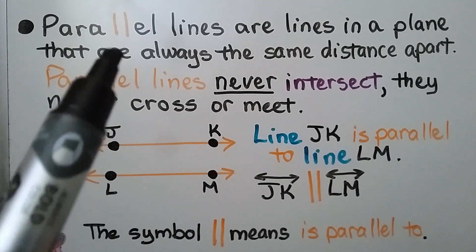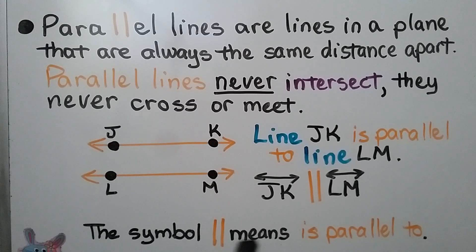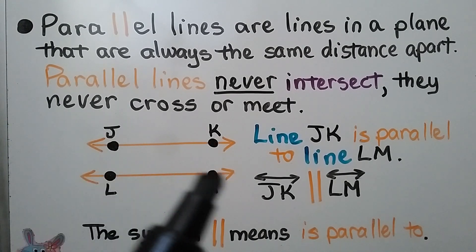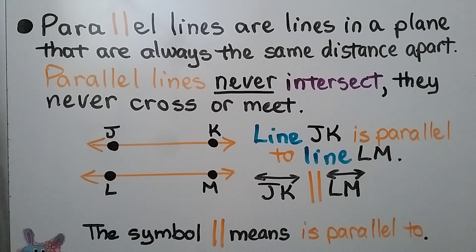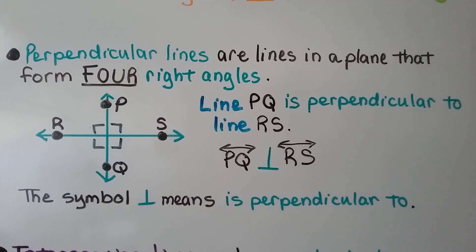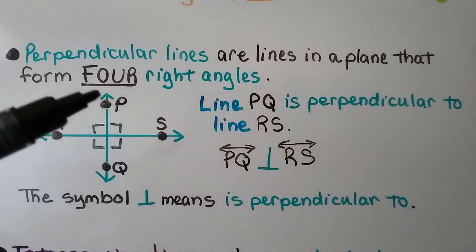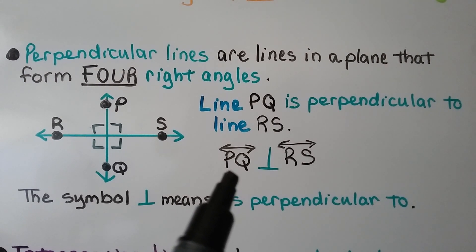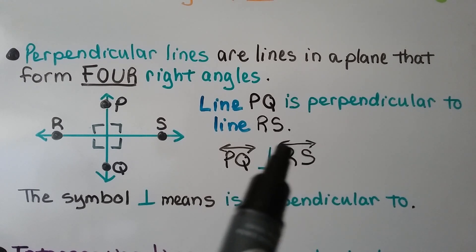Parallel lines are the two lines that never meet. This symbol means 'is parallel to.' We have line JK is parallel to line LM, and we would write it with the symbol as line JK is parallel to line LM. Perpendicular lines are lines in a plane that form four right angles. Line PQ is perpendicular to line RS — we write it as capital PQ with the line symbol, then this upside-down T symbol, then capital RS with the line symbol above it.